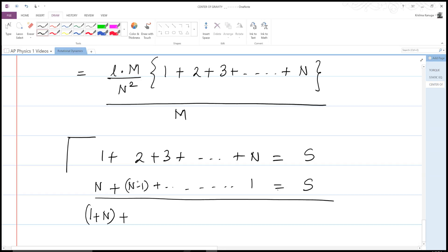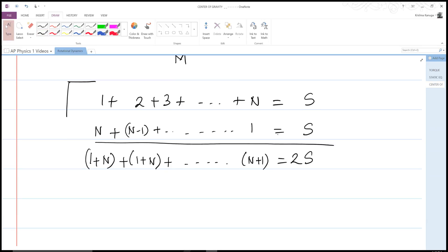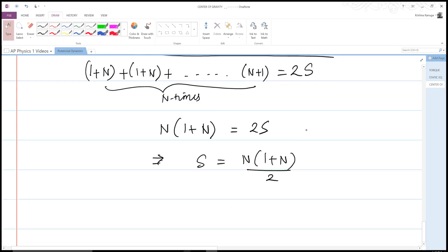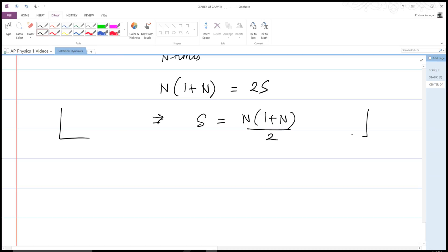Each of the terms ends up giving me 1 plus N, and it does so capital N number of times. This tells me that N times 1 plus N is equal to 2S, the sum. Therefore, S is equal to N times 1 plus N all over 2. Great, and close our box here.